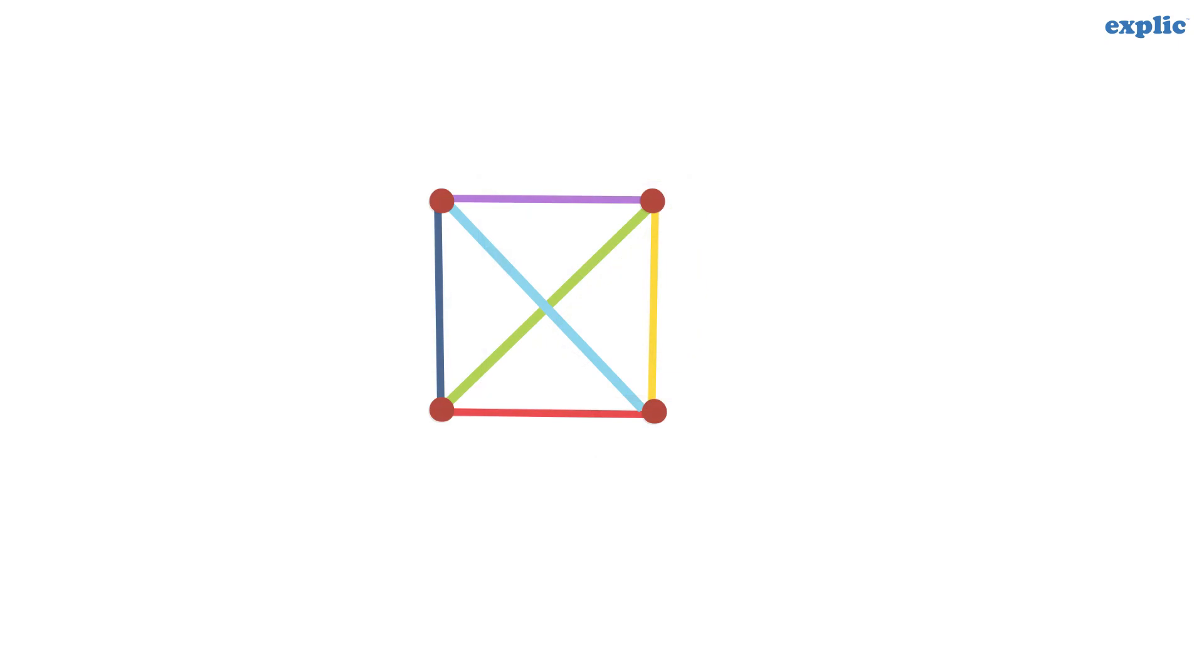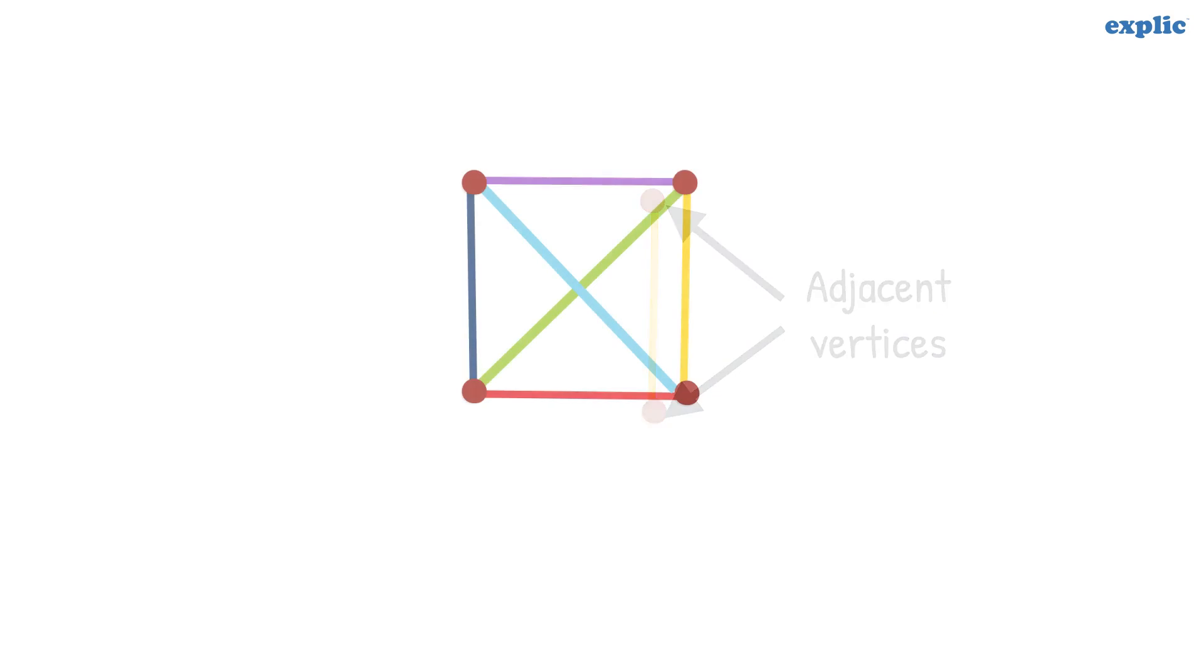The endpoints of the same side of a polygon are called the adjacent vertices. Any two sides with a common endpoint are called the adjacent sides of the polygon.